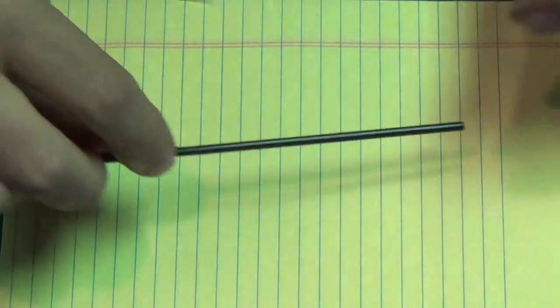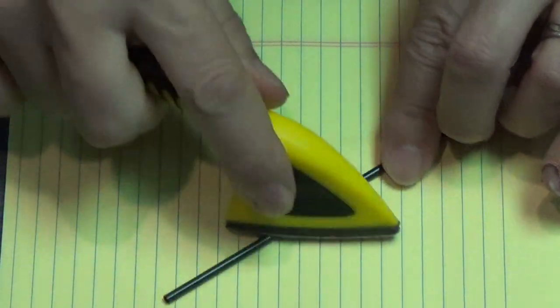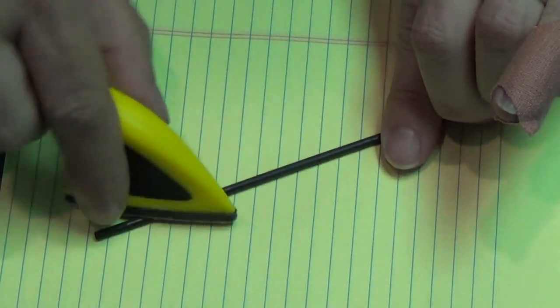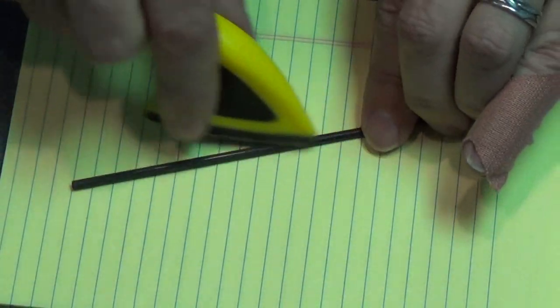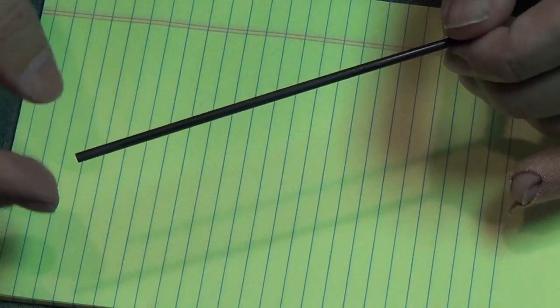This is just a coffee stirrer. I'm going to use this for the torch itself, for the length of the torch. But I need to scuff this up first. I'm going to use some sandpaper, and that will make it so the paint sticks easier to it and won't come off as easy. Just scuff it up all the way around. There we go, got the coffee stirrer.